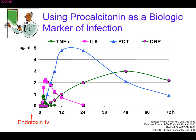Compared to four other markers — TNF-alpha, IL-6, or CRP — after injection of endotoxin in healthy subjects, PCT rises very quickly. That doesn't mean immediately, but very quickly. That is the first advantage.